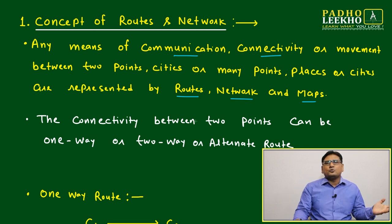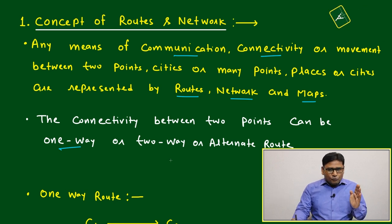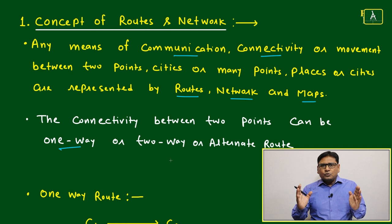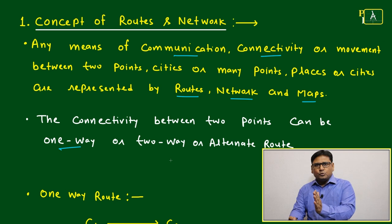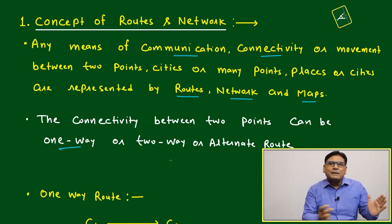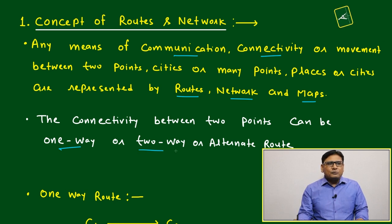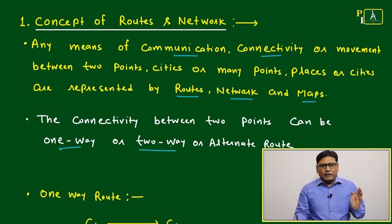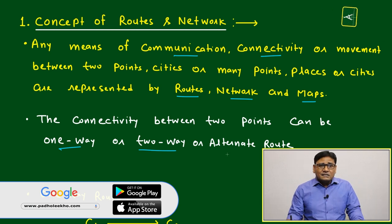Connectivity between two points can be one-way or two-way or alternate way. What is the meaning of one-way? One-way means if from point 1 to point 2 you can move in only one direction. If you are moving from point 1 to point 2, you can't come back by same route. Two-way route: by same road or same route you can come back, like from point 1 to point 2, which route you followed, exactly same route you can return back. And another is alternate route.